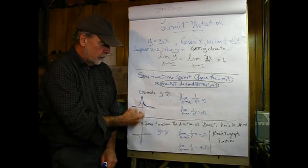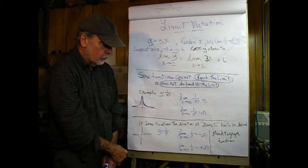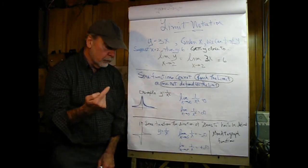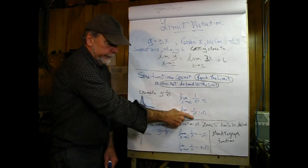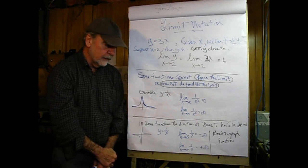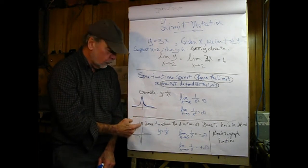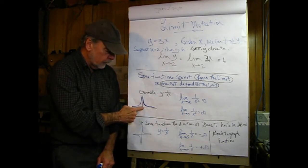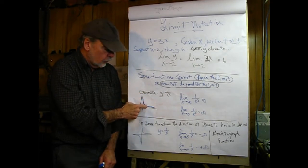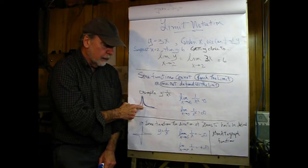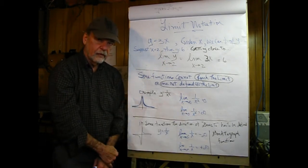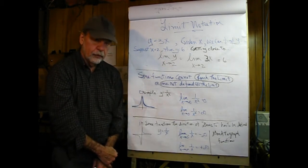Using the same equation y equals 1 over x squared, but now letting x go to 0, we get something completely different. If x were equal to 0, we have a divide by 0 — that's undefined. But as we get closer and closer to 0, the value of y gets larger and larger. So, as x approaches 0, y approaches infinity. In limit notation, as x goes to 0 of 1 over x squared, that equals infinity.